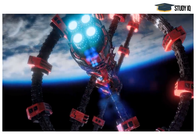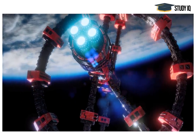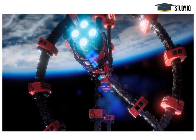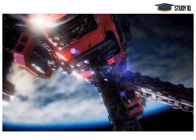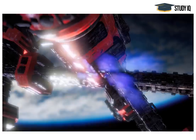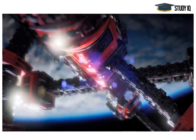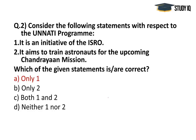The third objective is to provide a standard bus for launch-on-demand services, and the fourth is to provide an opportunity to carry innovative payloads for universities and R&D laboratories. Regarding the earlier MCQ — the answer is only Statement 1, which is correct: it is an initiative of ISRO. Statement 2 is incorrect — UNNATI is a nano satellite development program, not an astronaut training program.